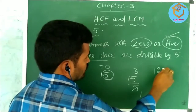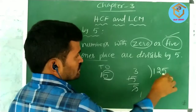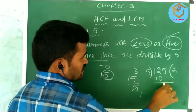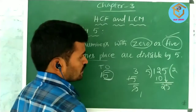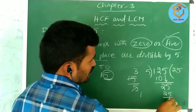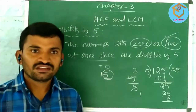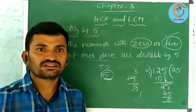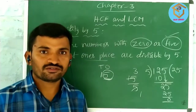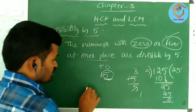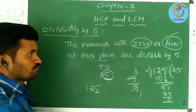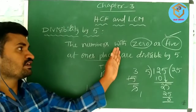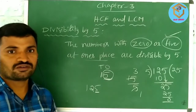Let us take one more number — 125. Let us check whether it is divisible by 5 or not. 5 into 2 gives 10, remainder 2; take 5, it becomes 25, and 5 × 5 = 25. We get remainder 0, which means 125 is exactly divisible by 5. In 125, the 1's place digit is 5, so the condition is satisfied — if the 1's place digit is 5, the number is divisible by 5.